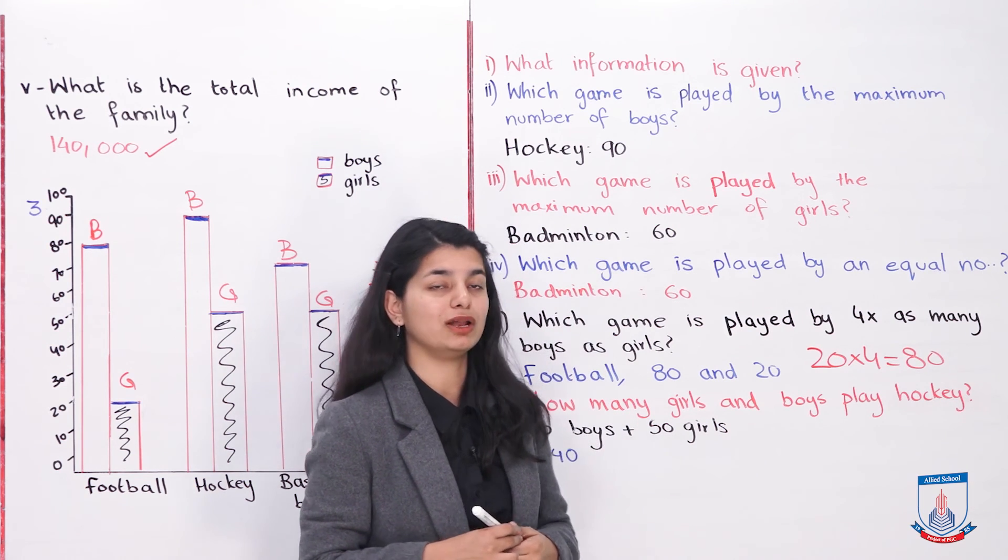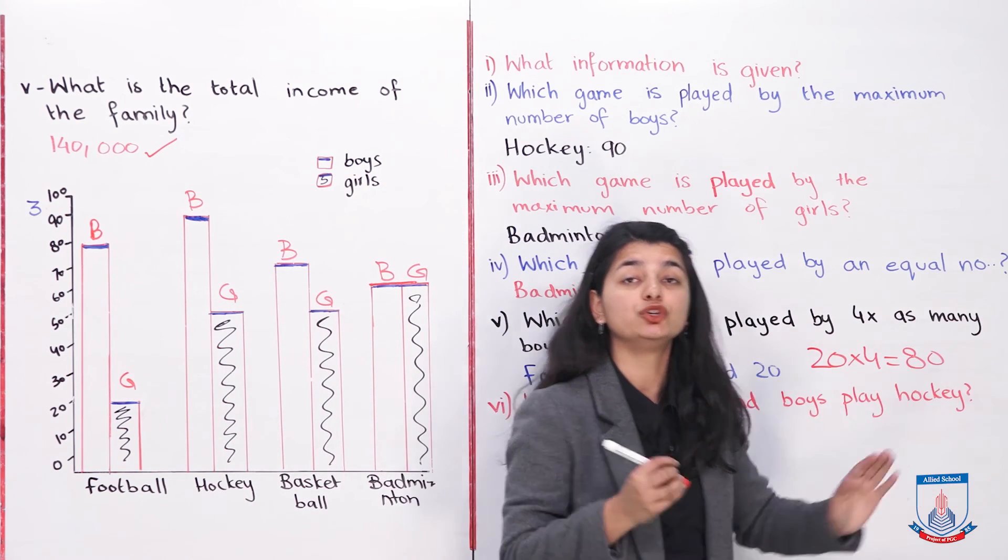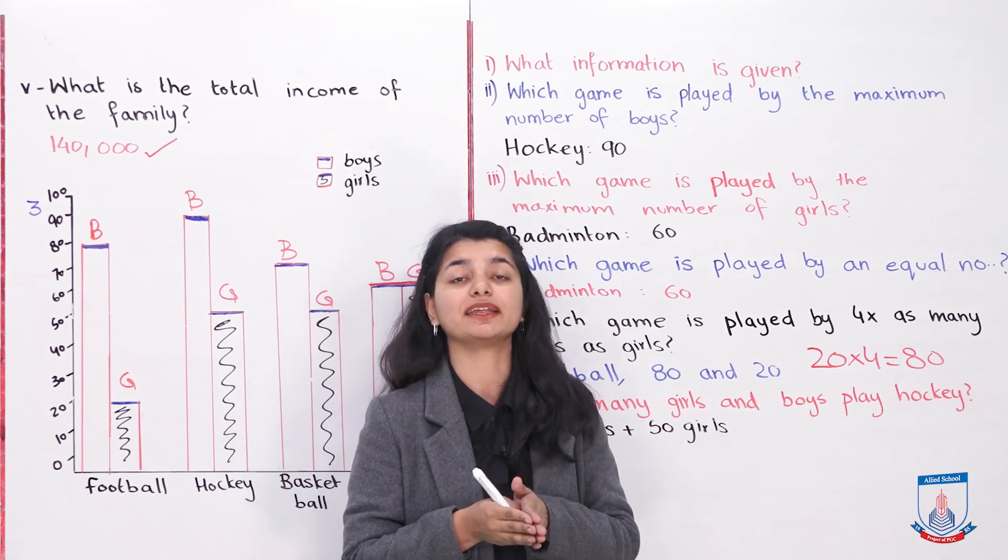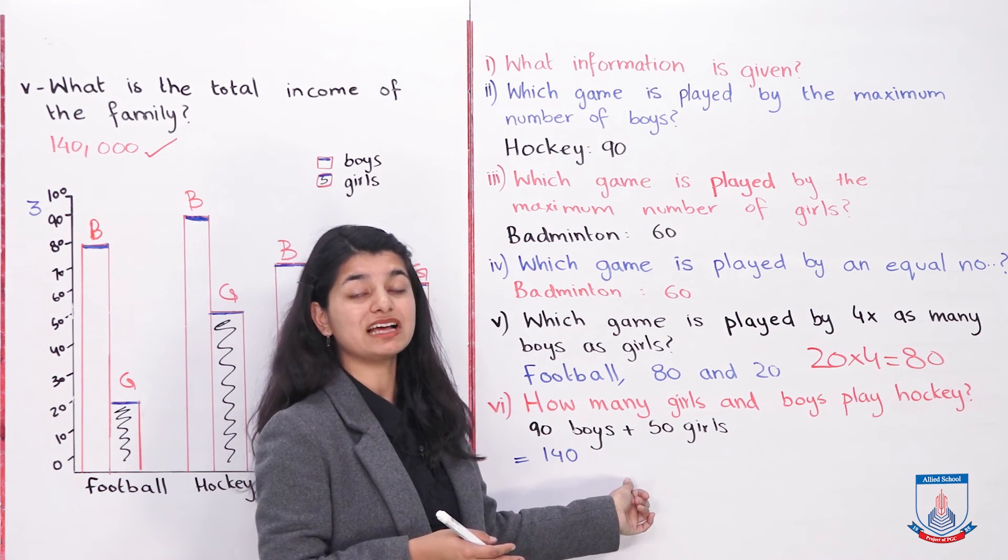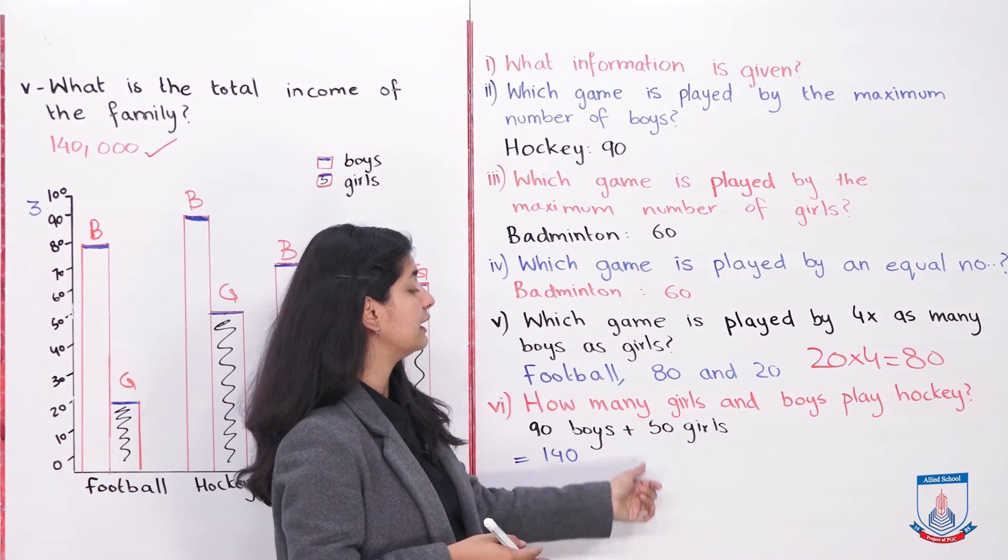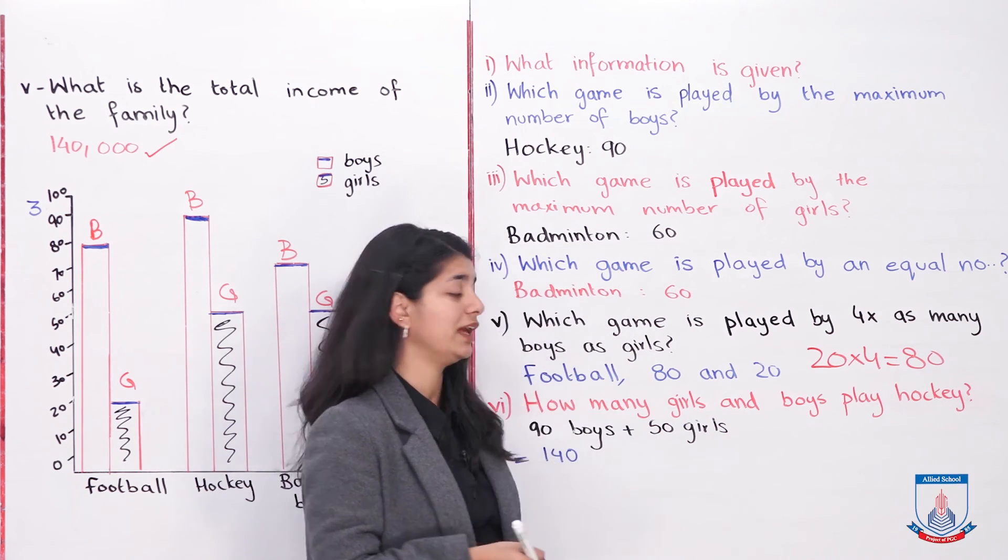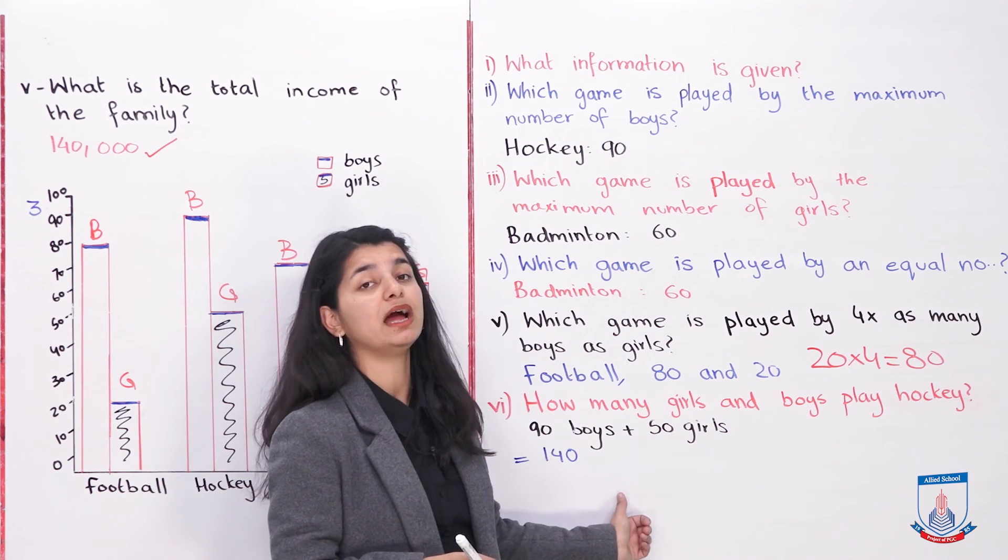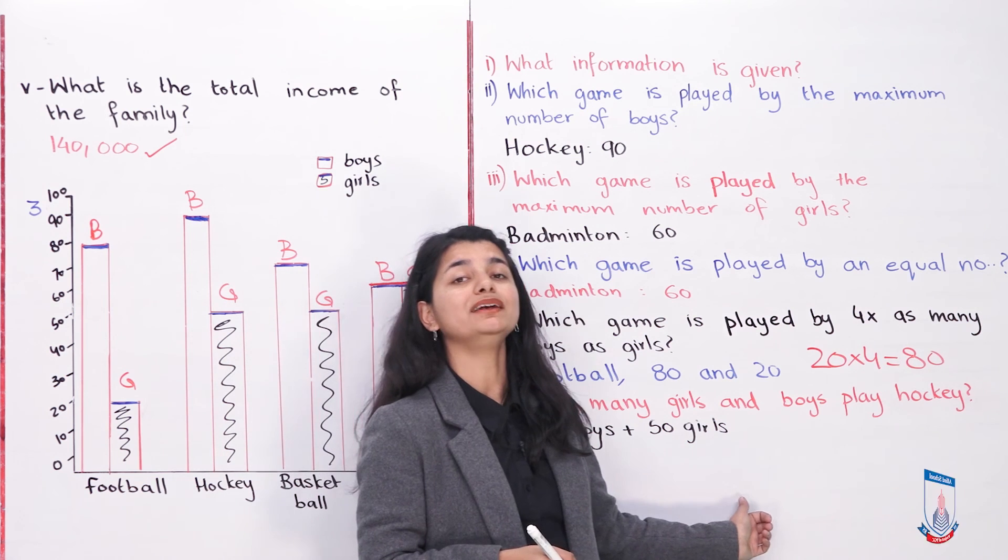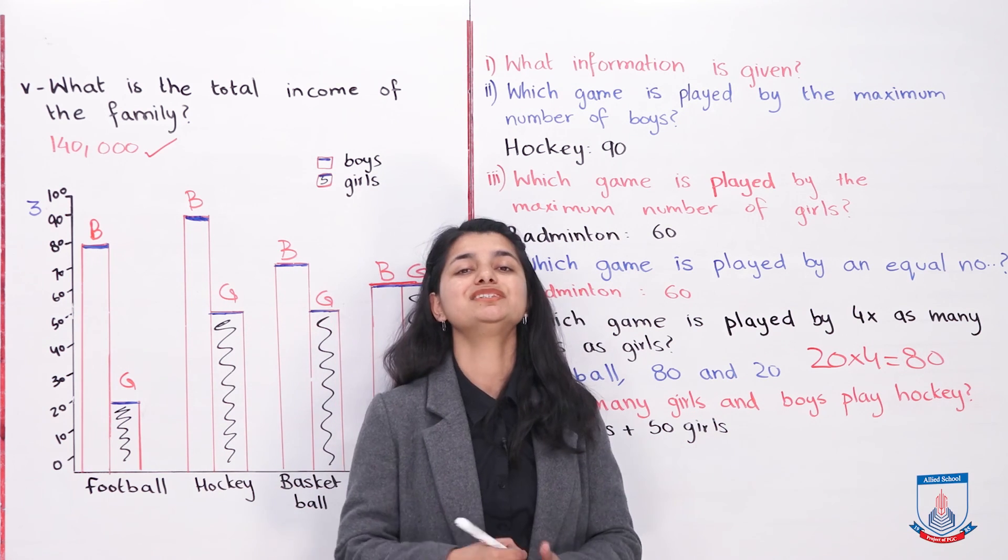Lastly, how many girls and boys play hockey? The total, how many boys and girls play hockey? The number is 90 boys. You can study the bar. The number is 50 girls. So when we add them, what is 90 plus 50? 90 plus 50 is 140. So 140 girls and boys all together play hockey.